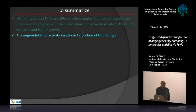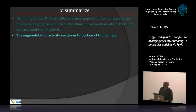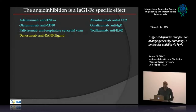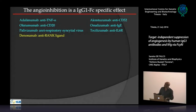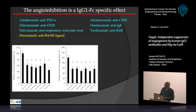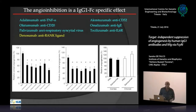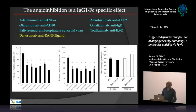We worked with bevacizumab, which is IgG1, but there are also IgG2, IgG3, and IgG4 in humans. To understand if this is an IgG1-specific effect, we used six different monoclonal antibodies used in human therapy. None of these recognized mouse counterparts, and all were IgG1 except denosumab, which is an IgG2 molecule. All IgG1-based monoclonal antibodies gave inhibition of angiogenesis in cornea and choroid, while denosumab was ineffective.